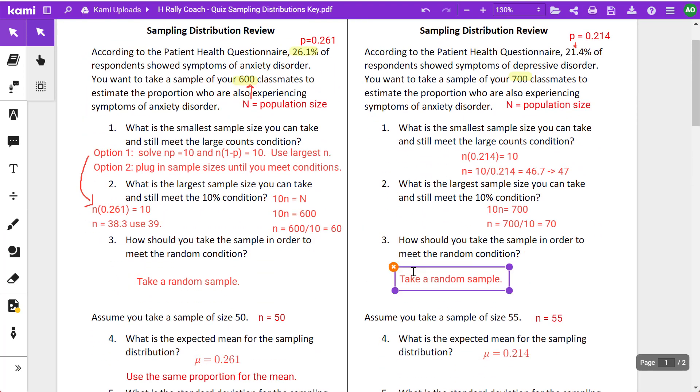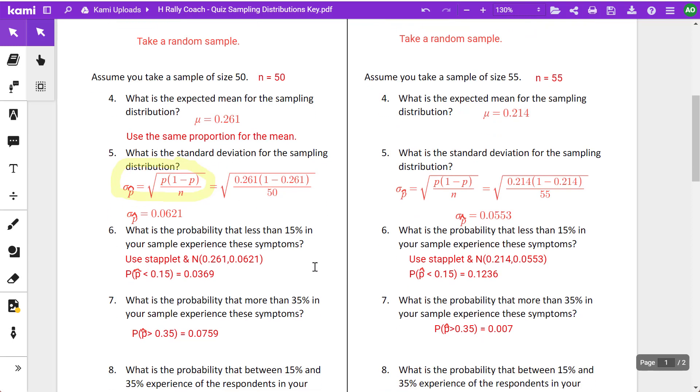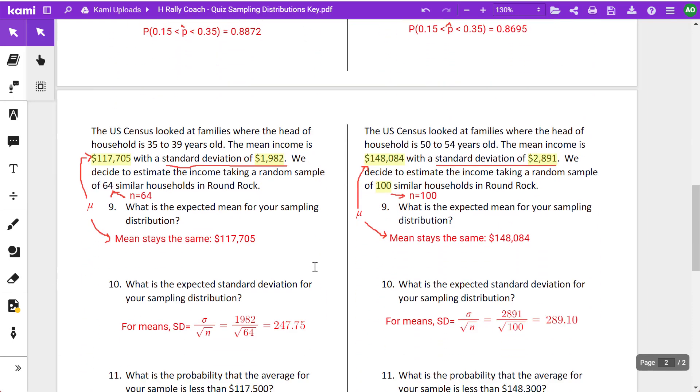So just again, a quick wrap up. We have the 10% condition. You should know the random condition and the large counts for proportions. Remember, this does not apply to means. And then once you, if you're doing probabilities for a sample, then you need to use the adjusted standard deviation, which is in this yellow formula here. So your standard deviation is going to tighten up. On the next page, we're looking at distributions for means.